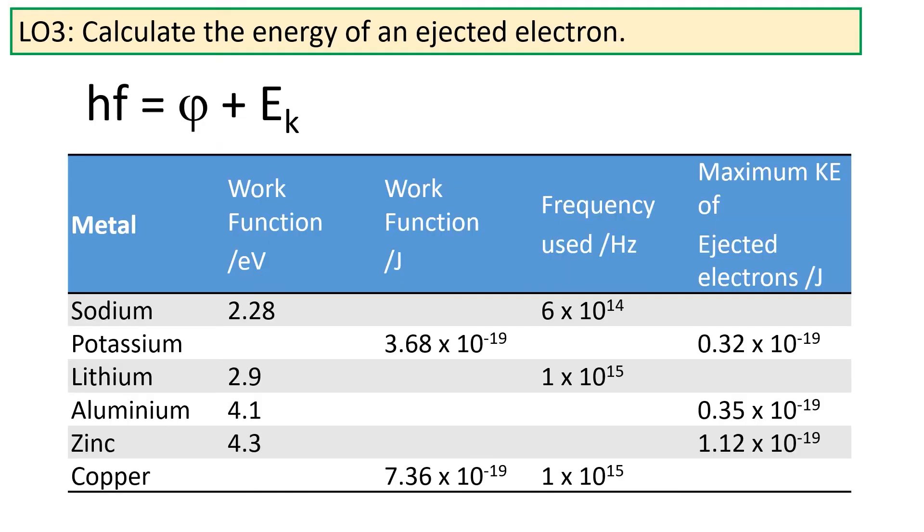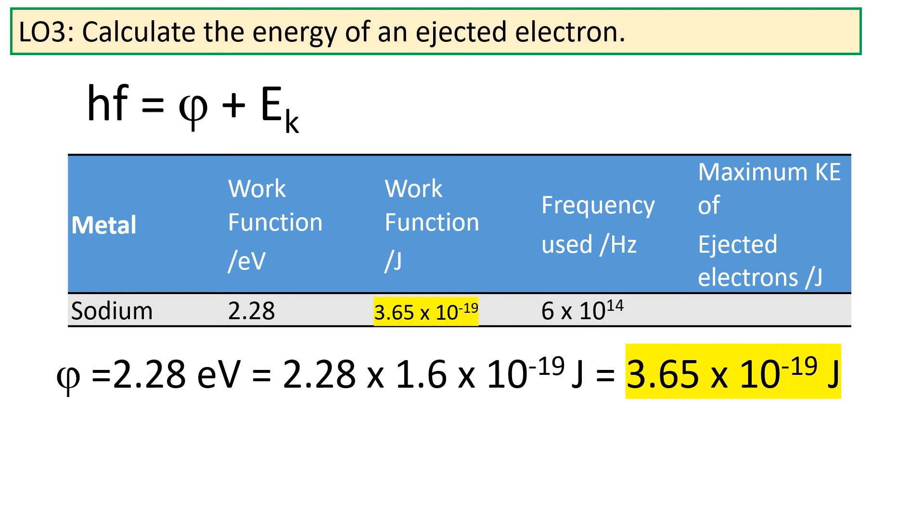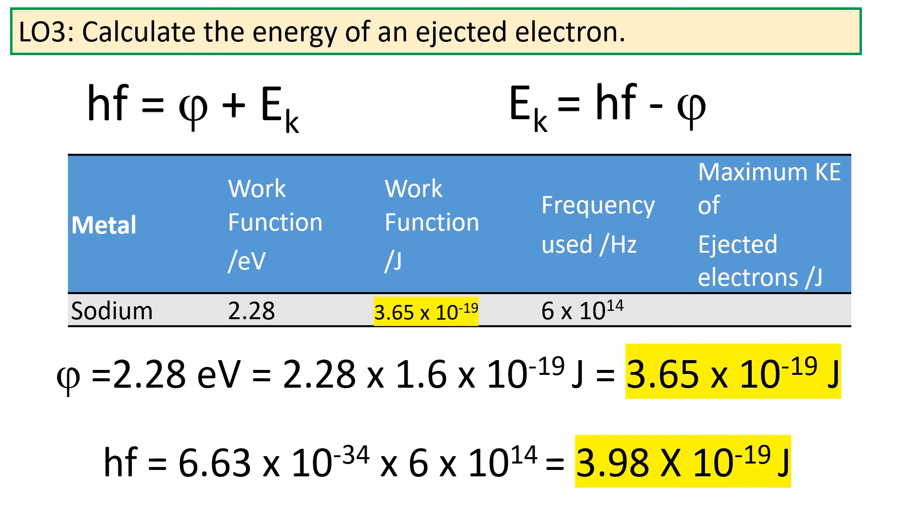Finally, we're going to get some practice using this equation. First, we're going to calculate the work function and the maximum kinetic energy of sodium. To start with, sodium has a work function which is equal to 2.28 electron volts. We want to convert this into joules. In order to do that, we multiply by 1.6 times 10 to the minus 19, giving us a work function of 3.65 times 10 to the minus 19 joules. Secondly, we'd like to calculate the kinetic energy of the ejected electrons. In order to do this, we're going to rearrange our formula to give us Ek is equal to hf minus φ. We've got the frequency of the photons, so we're going to convert that into an energy. We get that the energy of the photons is 3.98 times 10 to the minus 19. This gives us a kinetic energy of the electrons equal to 0.33 times 10 to the minus 19.